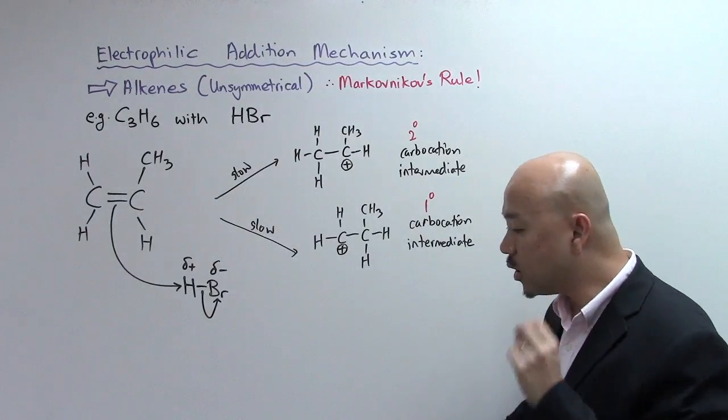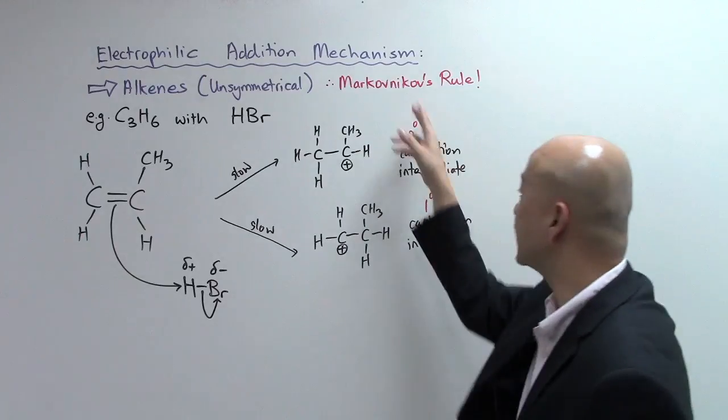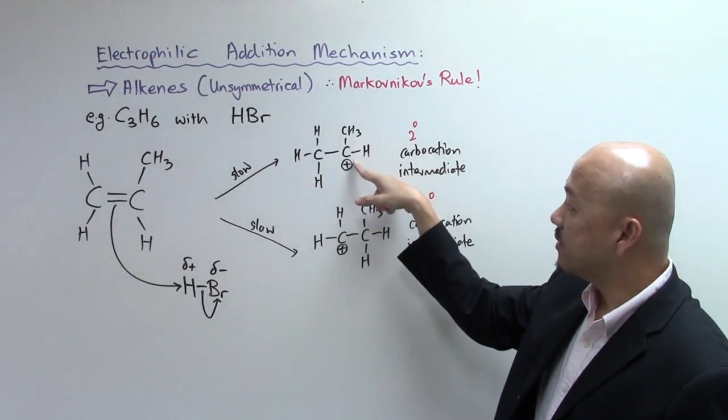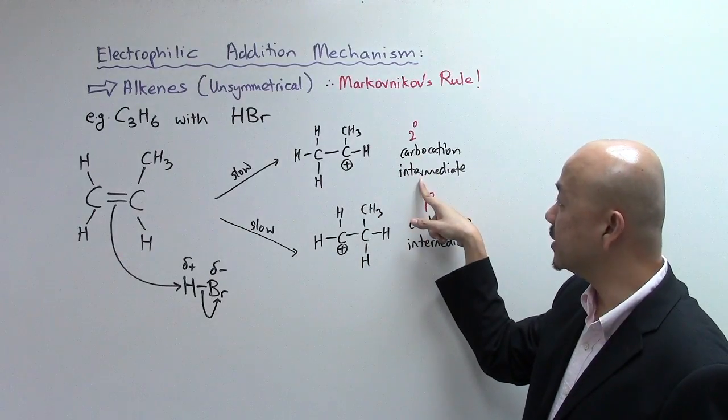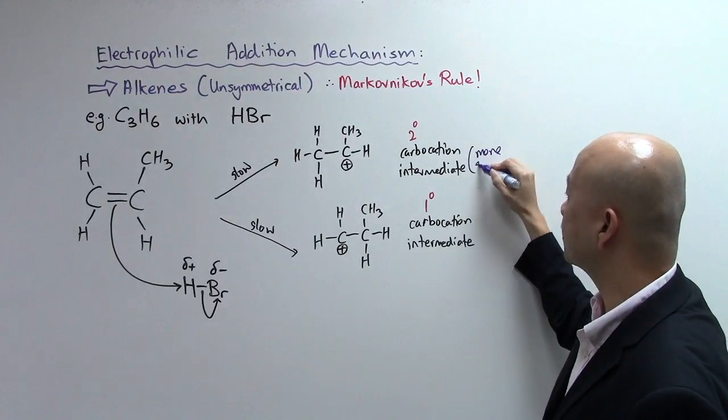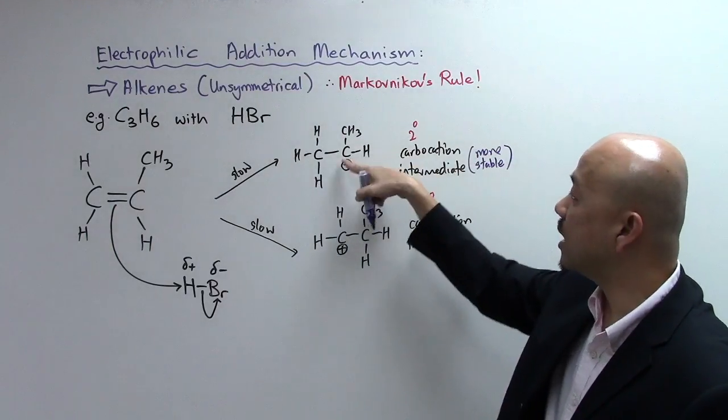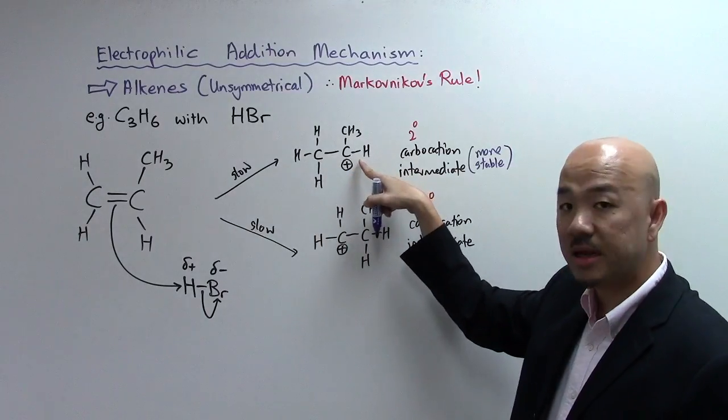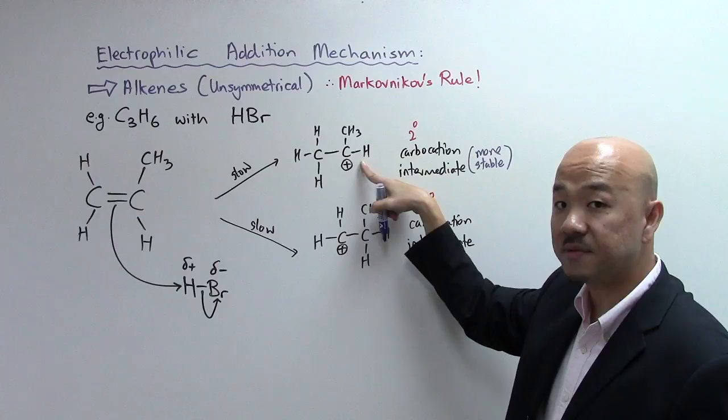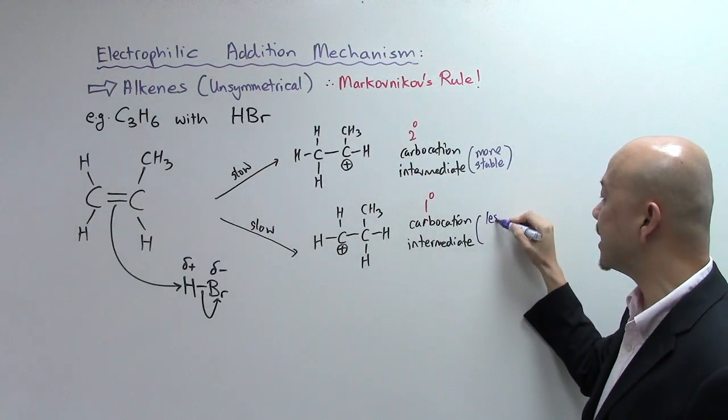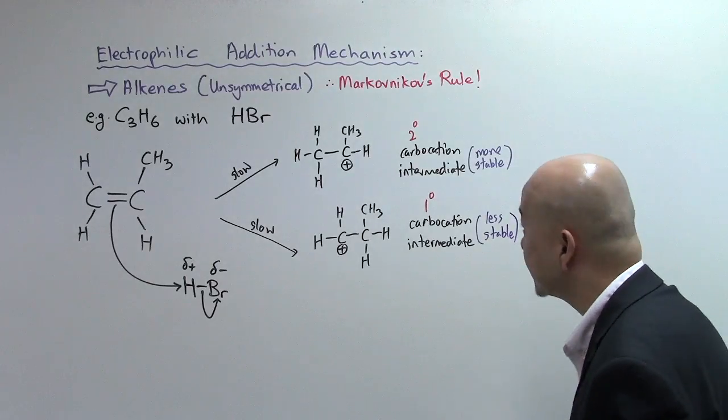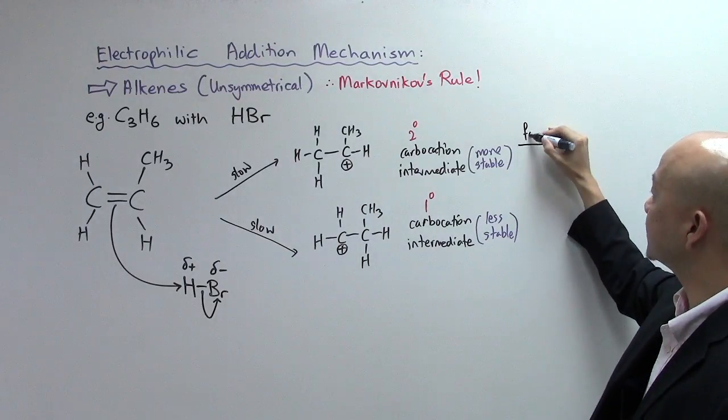Now according to Markovnikov, he proposed that this secondary carbocation intermediate will be more stable because you have two R groups, one, two, that donate electrons over here to counter the positive charge. So this is more stable whereas this is less stable.